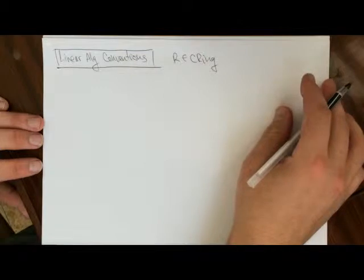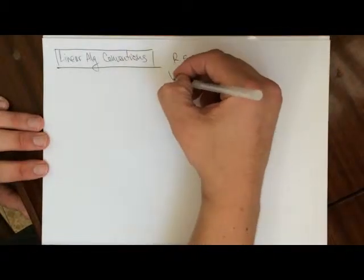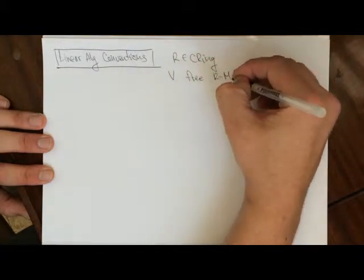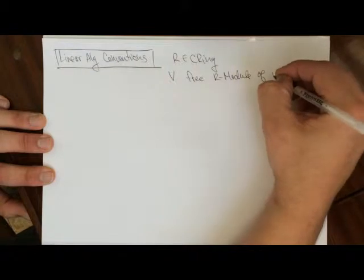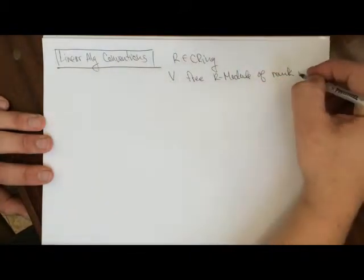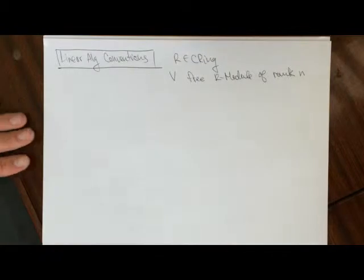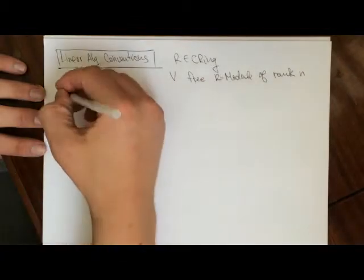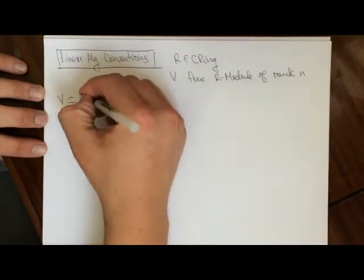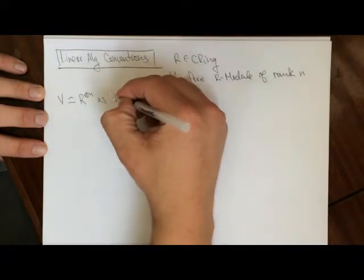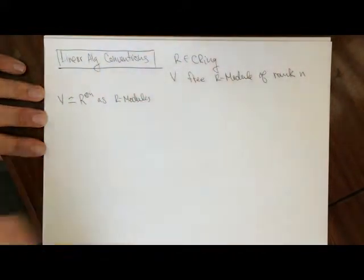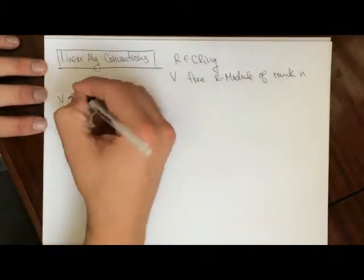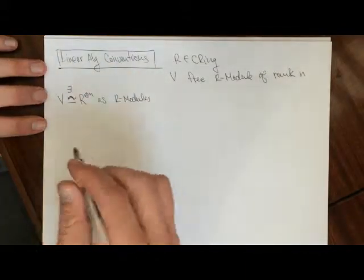What I want to talk about is: let V be a free R-module of rank n. Because it's a free R-module of rank n, we know that V is isomorphic to R^n as R-modules, but we don't necessarily know — we were not given this isomorphism — we just know that there exists one.